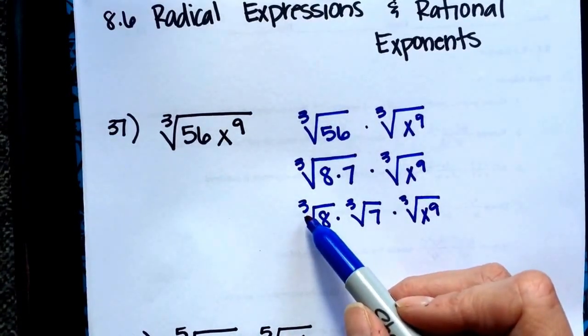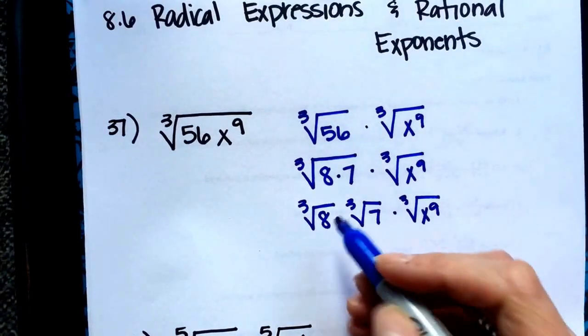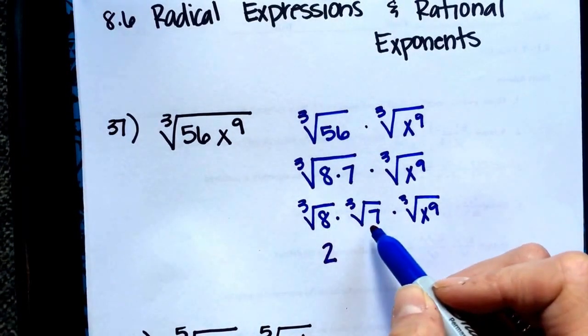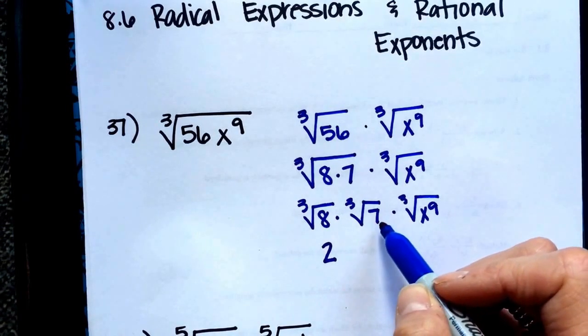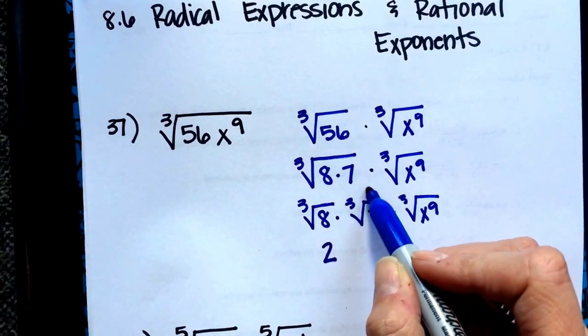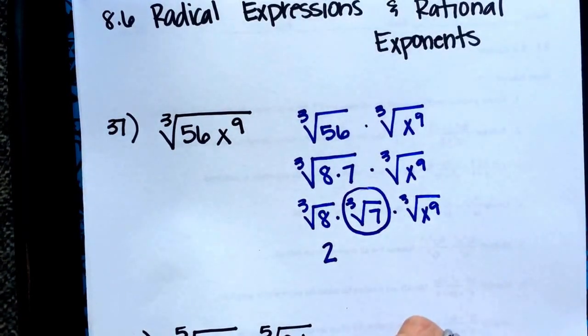A number that I can multiply by itself three times to get 8 is 2. There's nothing I can multiply by itself three times to get 7, and 7 doesn't break down, it's prime. So I'm going to have to leave that one in a radical.